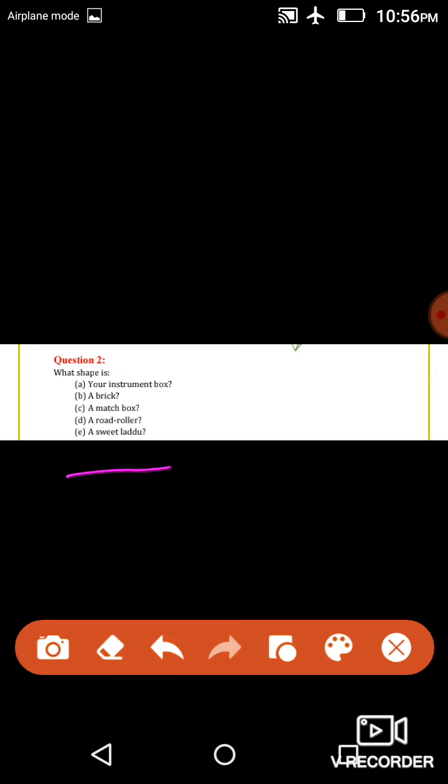These were two questions: question number 1 and question number 2. This exercise 5.9 has only two questions. You have to complete these in your fair copy. Thank you.